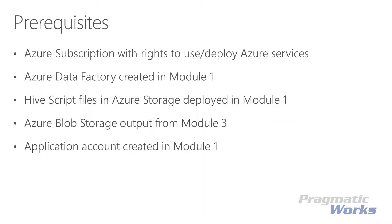Before we talk about the tasks for this lab, let's discuss what you'll need to complete this lab module. You'll need an Azure subscription with rights to deploy and use Azure services. You will need to have the Azure Data Factory we created in lab module 1. Also as part of lab module 1, the deployment script uploaded the Hive query files that we'll use in this lab to our Azure Blob Storage container. The output from lab module 3 is the FAA master text file that is used as part of our merge in this lab. However, if you didn't complete that lab module, we did actually deploy a copy of that text file to the Azure Blob Storage container as part of the deployment script in lab module 1.